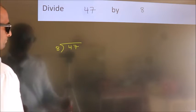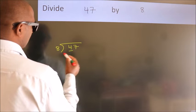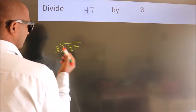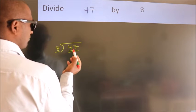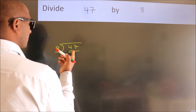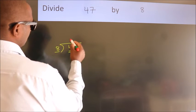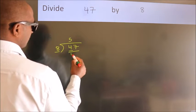Next, here we have 4, here 8. 4 smaller than 8. So we should take 2 numbers, 47. A number close to 47 in 8 table is 8 fives 40.